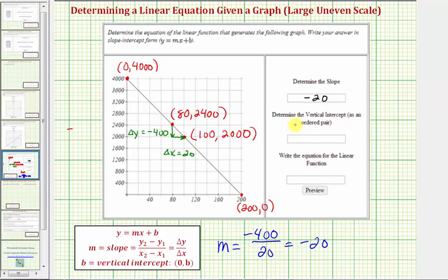Now the next question asks us to determine the vertical intercept, which we already found. Notice how the line intersects the vertical axis at the point zero comma 4,000, which is the vertical intercept. So open parenthesis zero comma 4,000, close parenthesis.